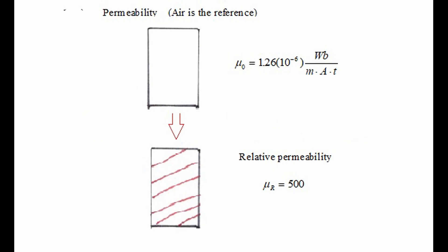How well a material can be magnetized is called permeability, and the reference for permeability is air. Imagine we have a cardboard tube with nothing but air inside. If we try to magnetize it, we find that the permeability of air is 1.26 times 10 to the negative 6 power weber per meter amp turns. This very small number means it is very difficult to magnetize free air.